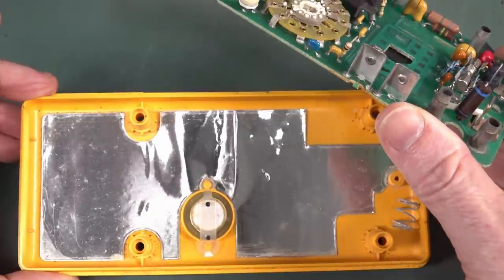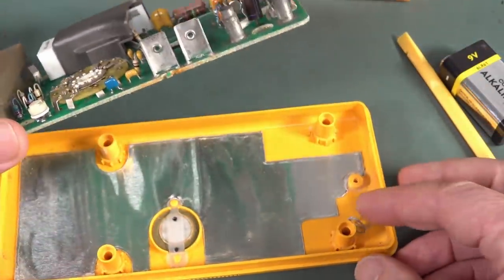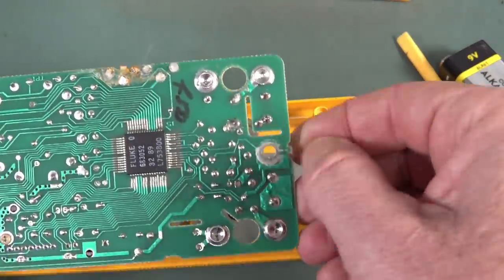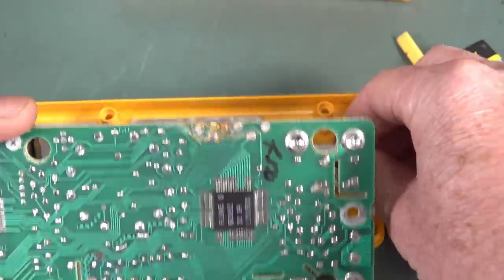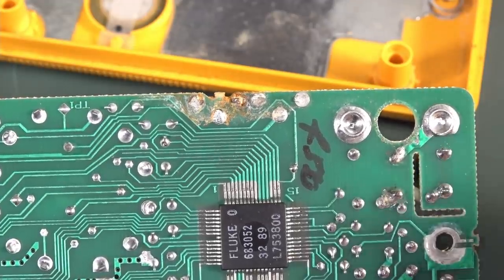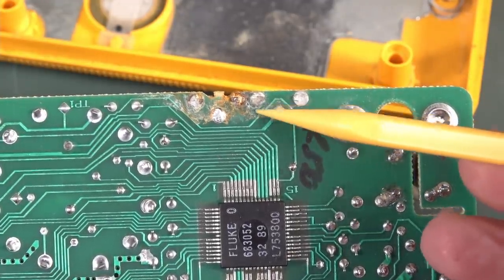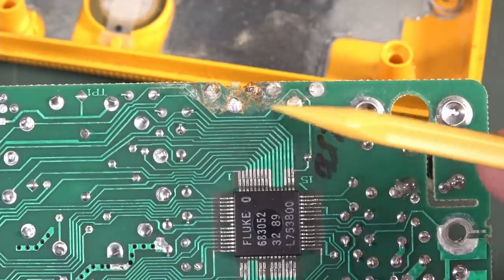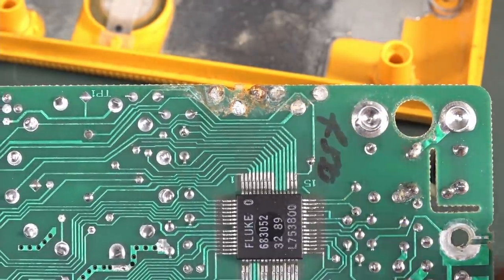Nothing obviously blown on the front end there. Let's whip the board out and have a squiz. We've got our shielding on the bottom. What the heck? That was just sitting on the bottom. That would have come from there. Okay, that's to connect. Got some corrosion up there. That's not a happy camper. It looks like the battery has leaked.